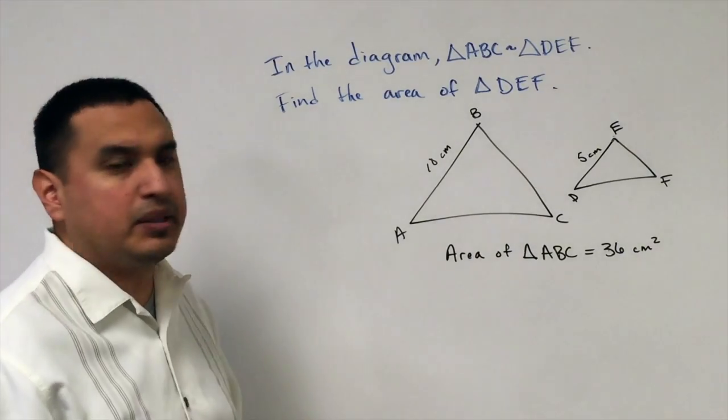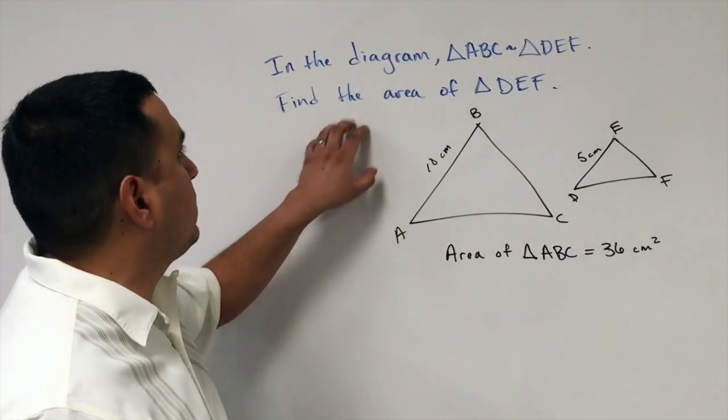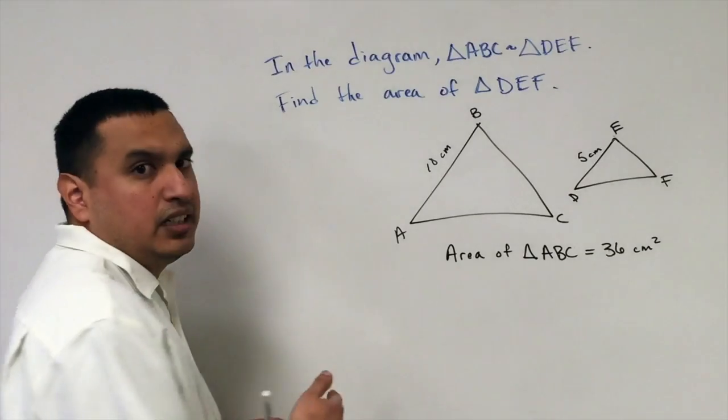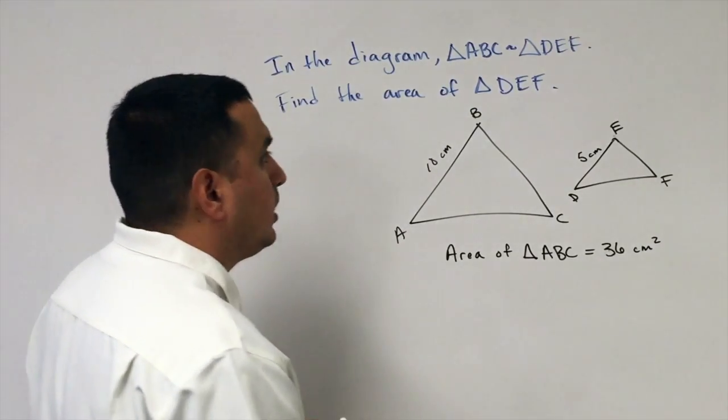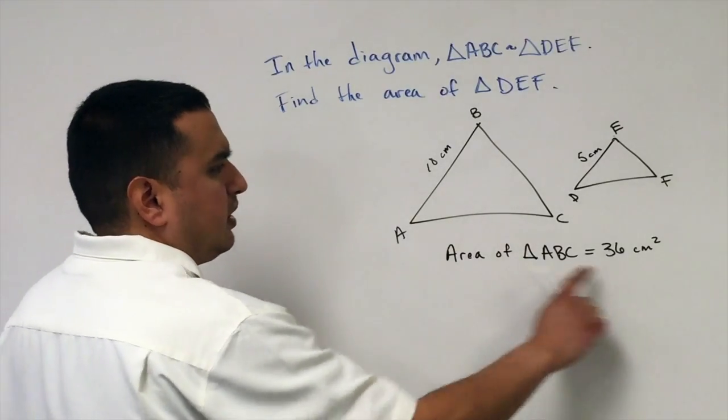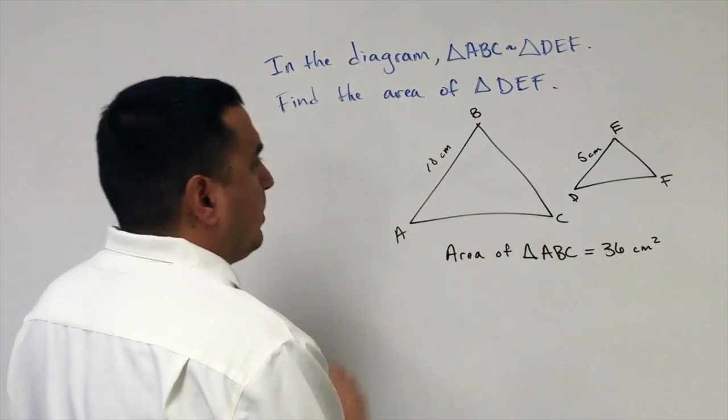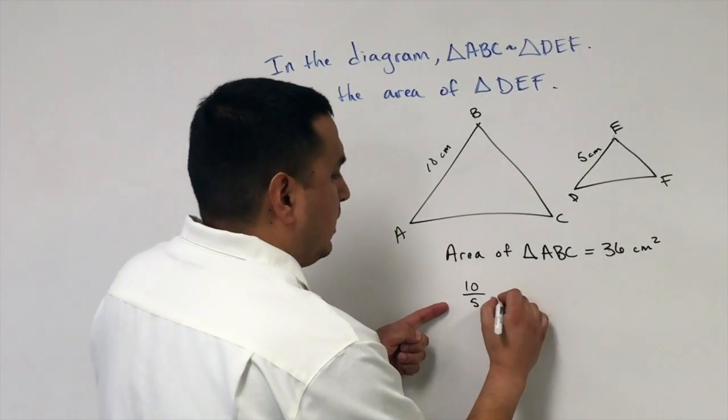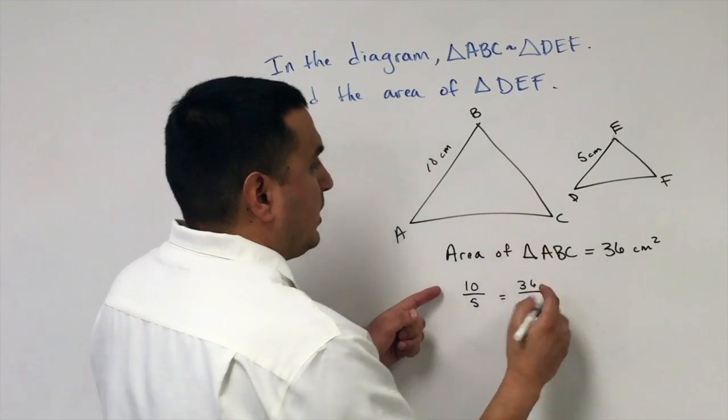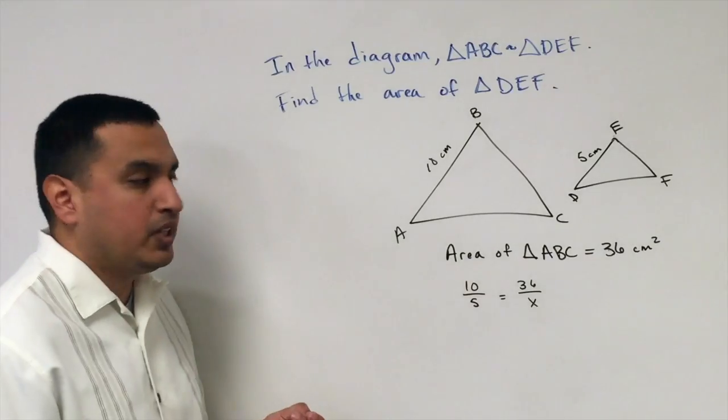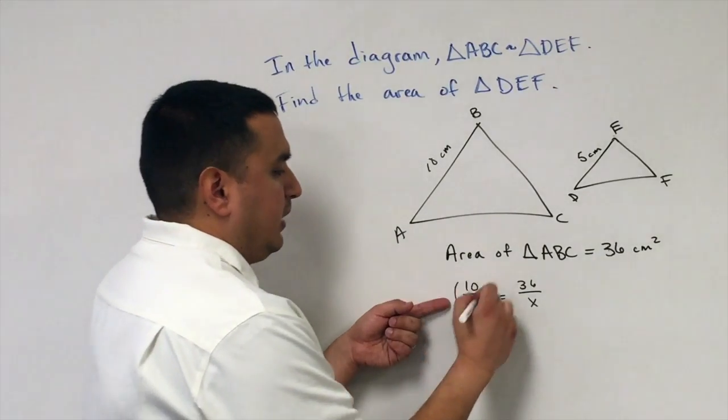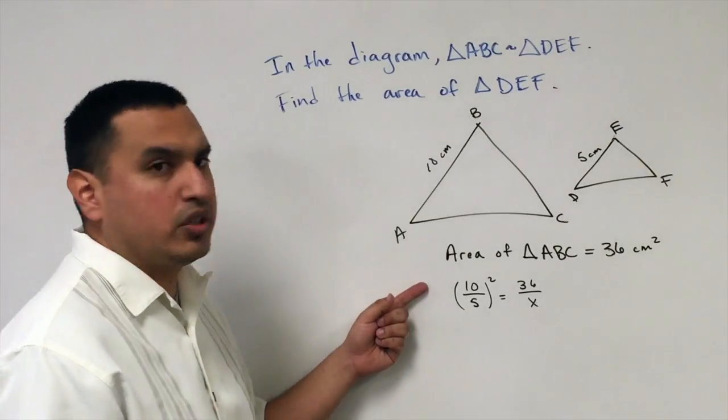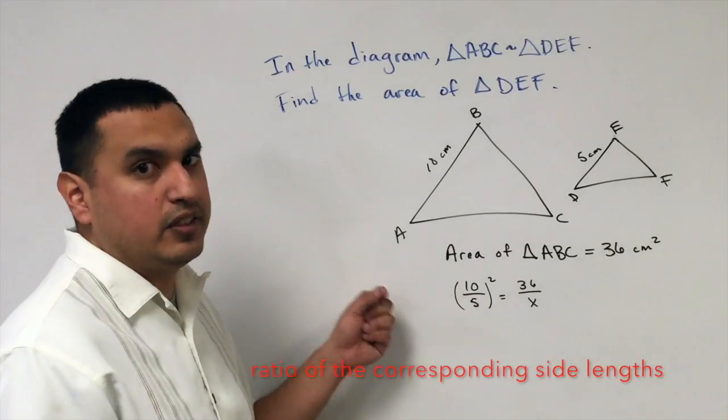Now we're looking at area of similar polygons. We want to find the area of triangle DEF. This is slightly different from perimeter. The ratio of areas is not equal to the ratio of sides. Since area is in square units, I have to take the ratio of the sides, 10 over 5, and square it. The ratio 10 over 5 doesn't directly equal 36 over X, where X is the area of DEF. The key difference: the ratio of areas equals the square of the ratio of sides.